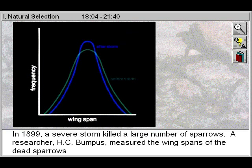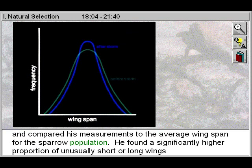In 1899, a severe storm killed a large number of sparrows. A researcher, H.C. Bumpus, measured the wingspans of the dead sparrows and compared his measurements to the average wingspan for the sparrow population.